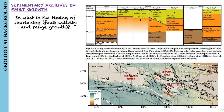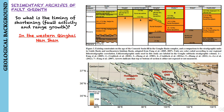So what is the timing of shortening — that is, timing of fault activity and range growth? Along the northern margin of the Chaka Basin in the western part of the Qinghai-Nanshan, shortening is bracketed to the past 6 million years.